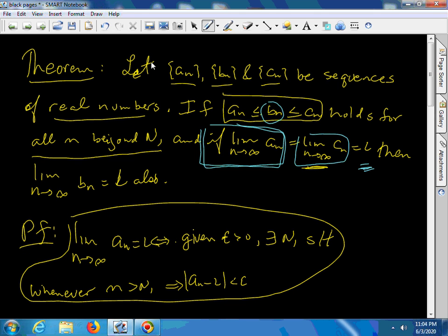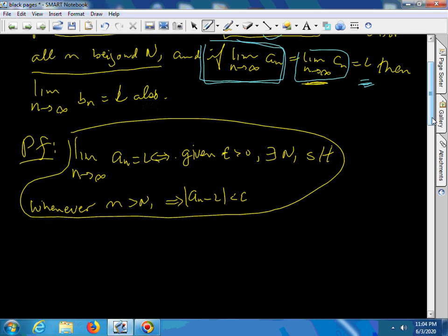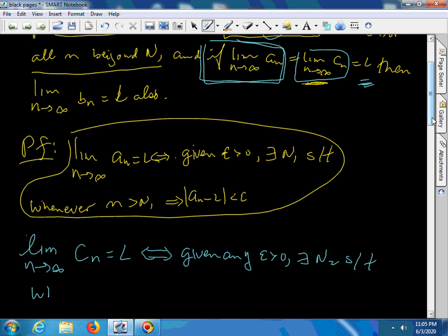The second limit tells me a similar story. The limit as n approaches infinity of cN equals L. That is the same statement as: given any epsilon greater than zero, there exists an N2 such that whenever N is bigger than N2, that implies that cN minus L is less than epsilon.